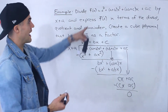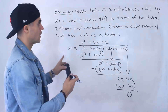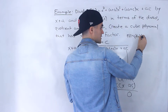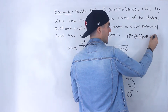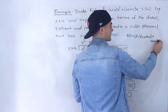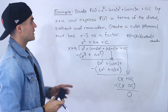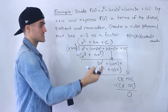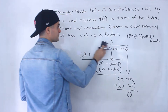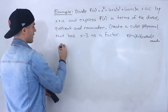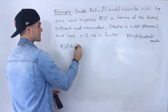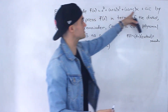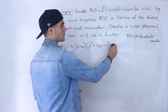So now we can take that function and express it. The general format is: function equals divisor times quotient plus remainder. So f of x equals (x plus a) times (x squared plus bx plus c) plus 0. So that function up there equals (x plus a) times (x squared plus bx plus c), with a remainder of 0 which we don't have to write.